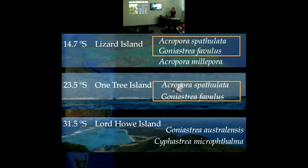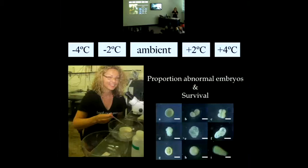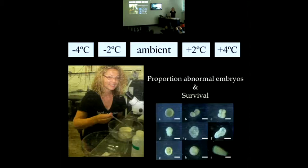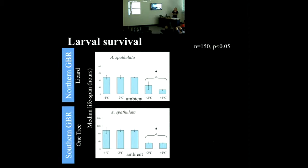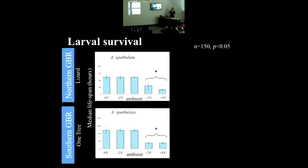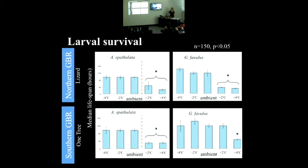I'm looking at both lethal and sublethal effects of temperature — the proportion of abnormal embryos at different temperature treatments, and survival. For Acropora baculata, the same species was compared in the northern Great Barrier Reef at Lizard Island and the southern Great Barrier Reef at One Tree Island. The threshold doesn't change — there is an effect of temperature between ambient and two degrees at both locations. For Goniastrea favulus, on the other hand, the threshold appears to be between ambient and two degrees in the northern Great Barrier Reef, but between two and four degrees in the southern Great Barrier Reef — which could be evidence for a greater breadth of tolerance at higher latitudes.